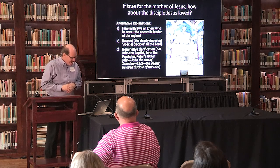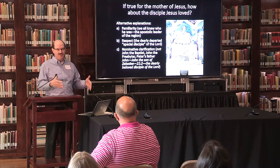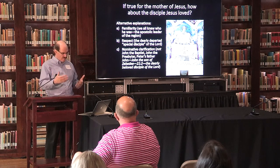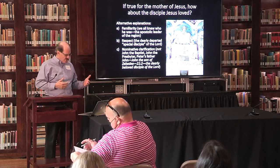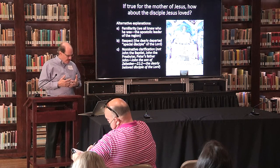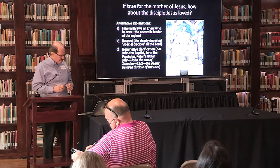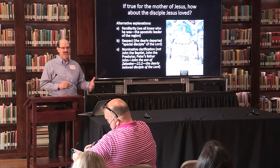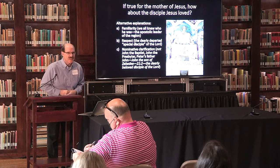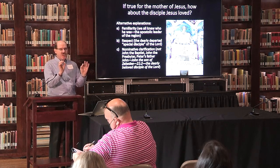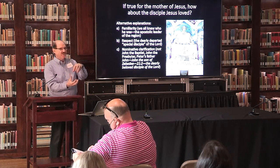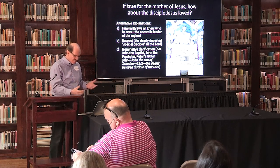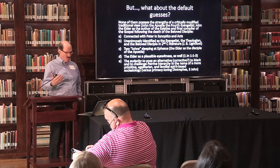How about nominative clarification? There's a bunch of Johns in the fourth gospel: John the Baptist, John the Presbyter, John the father of Peter, and John the son of Zebedee — those of Zebedee are mentioned in 21:2. Therefore, the dearly beloved disciple of the Lord is not named because his name probably was John. That is the most probable conjecture if you're trying to clarify nominative identity. There's no other male proper name used more in the narrative.